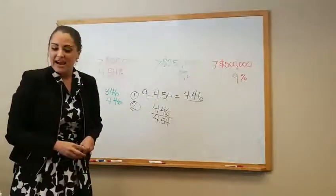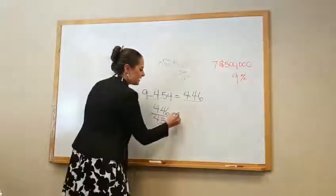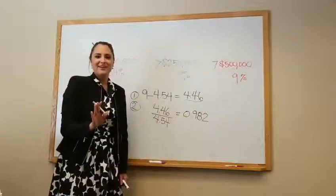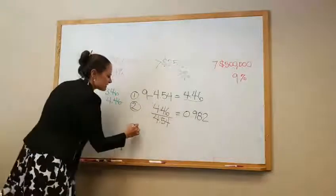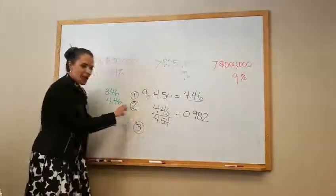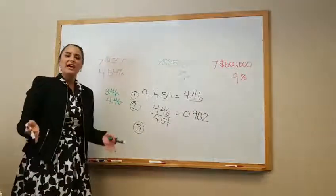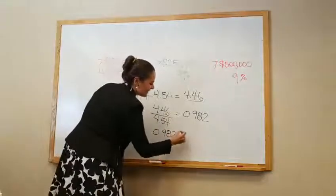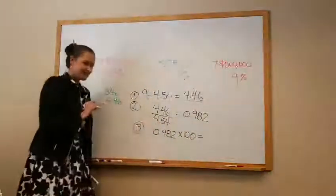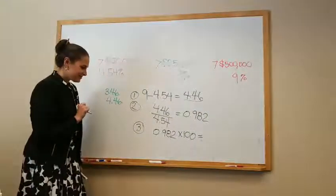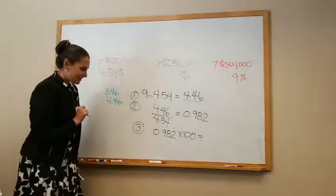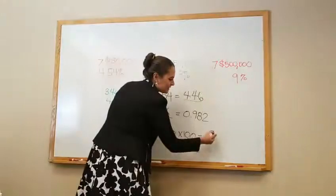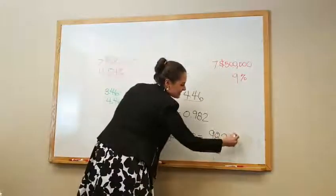Now we're almost there at our calculation of percent increase. The third step is to take our result from step two and multiply it by 100, and we have a percent. When you are multiplying by 100s and you've got your decimal point, you just have to move the decimal point by the number of zeros that you have. One, two. So that means the percent increase is 98.2%.